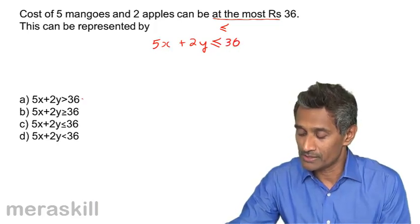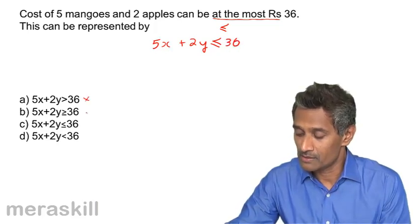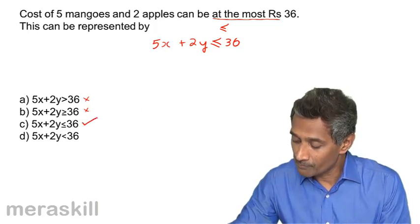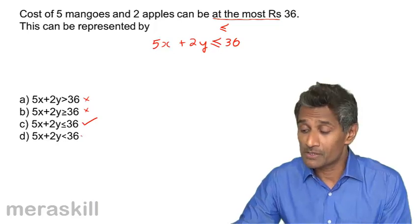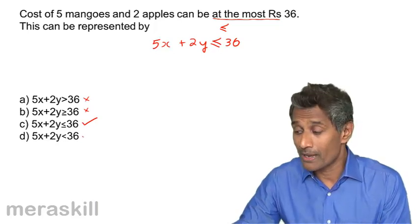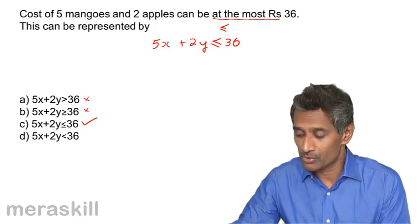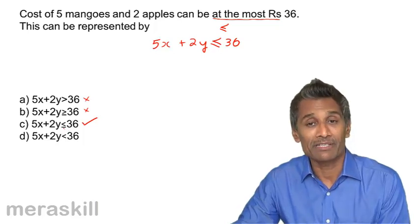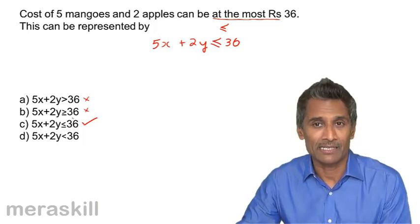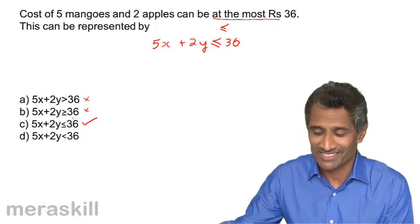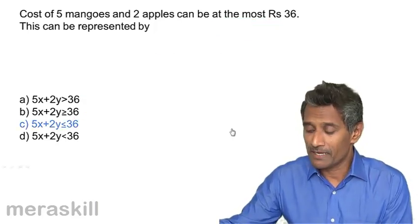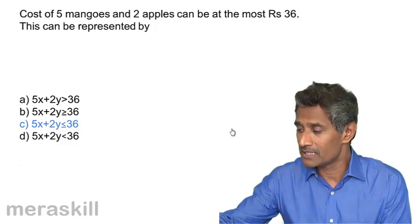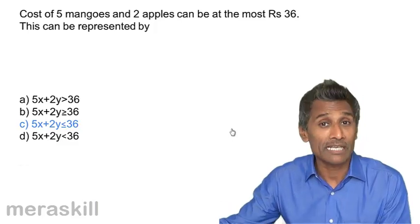Since we say it is at the most 36, it has to be less than or equal to 36. This option would have applied if the cost were strictly less than 36. So our answer is 5x plus 2y is less than or equal to 36. Let's move along to the next example.